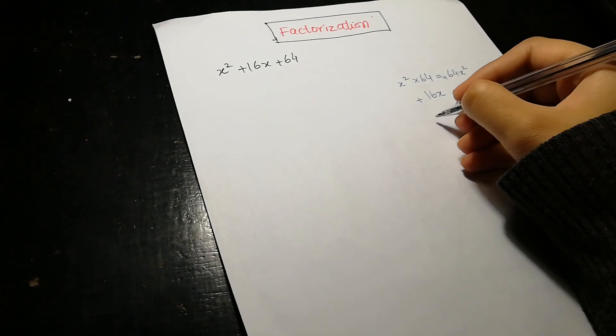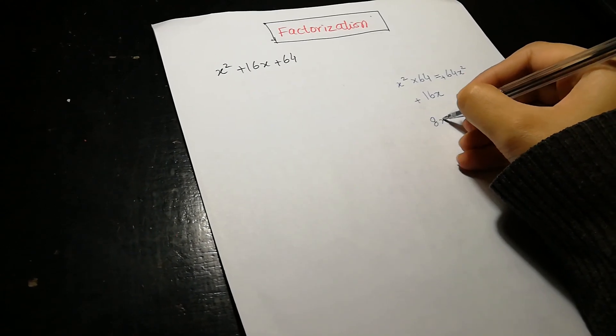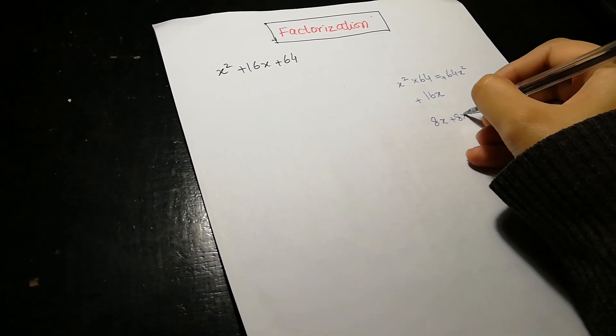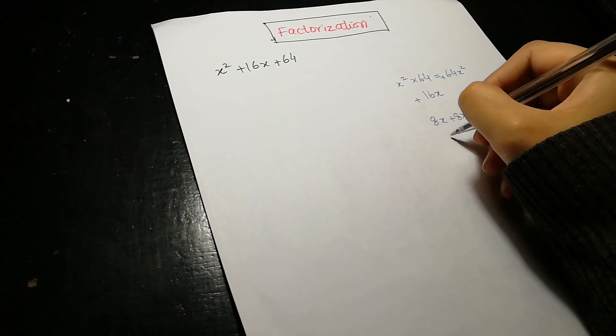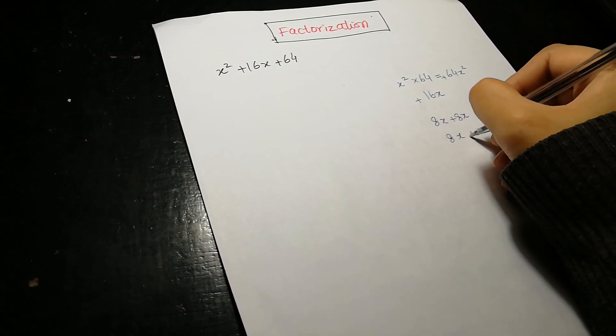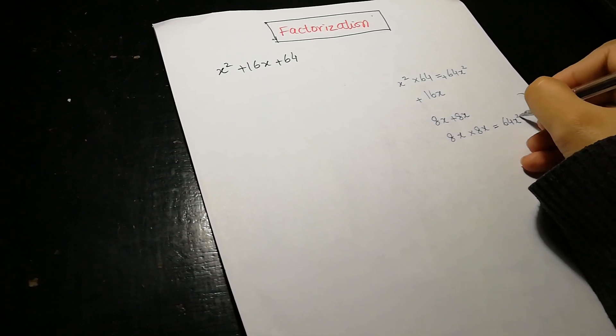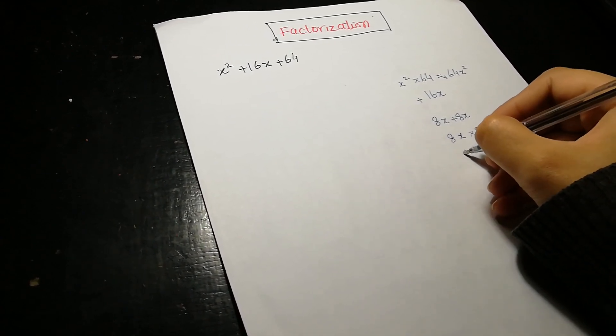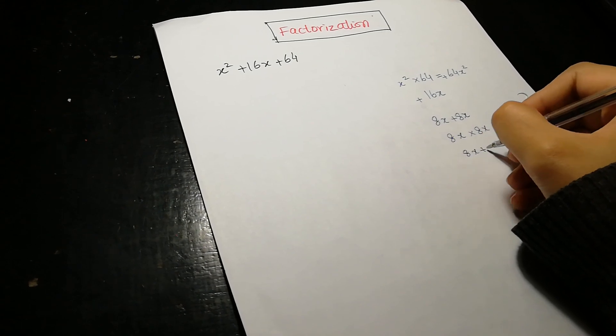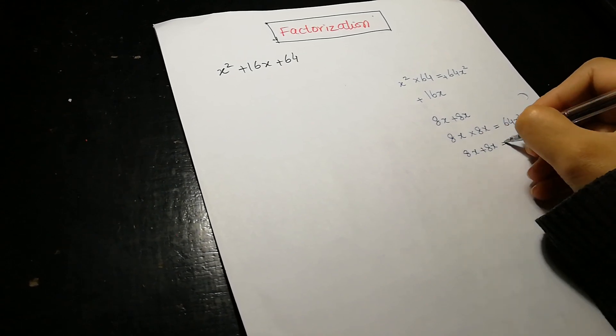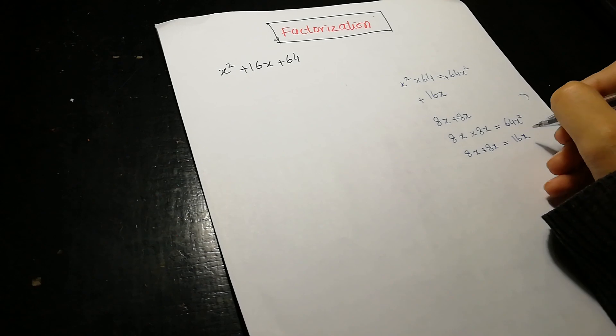So the two terms we require are 8x plus 8x. When we multiply them we get 8x times 8x equals 64x square, and when we add them we get 8x plus 8x equals 16x.